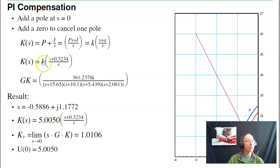Again, cross multiply it. That's K times S over S. That's P. K times 0.32 over S. That's I. That's my PI gains.